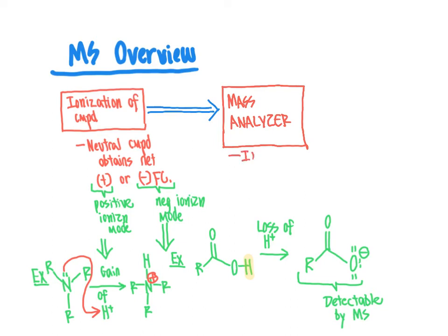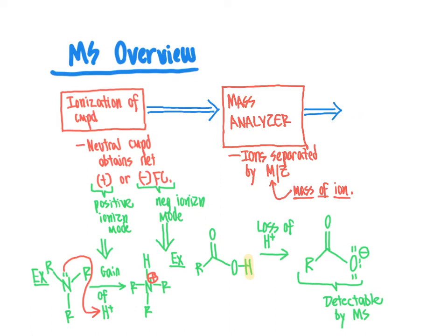As the term implies, the mass analyzer is where ions with different mass to charge ratios are separated. Through a variety of different methods — which we will go into in an upcoming video — the ions are separated based on their M over Z value, where M is the mass of the ion and Z is the charge. Ions with different mass to charge ratios are detected differently in the mass analyzer, enabling separation, after which those separated ions enter the detector where differences in mass to charge ratio are detected.